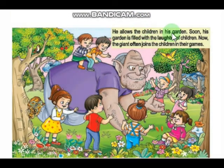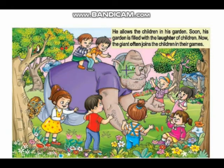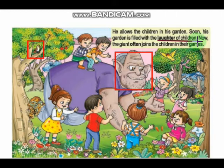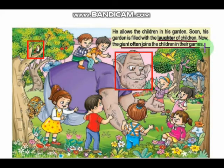He allows all the children into his garden. Soon his garden is filled with the laughter of children. Now the giant often joins the children in their games. You can see beautiful roses and flowers, birds making chirping sounds, and all the smiles of the children. The garden is filled with joy and even the giant has joined with them.